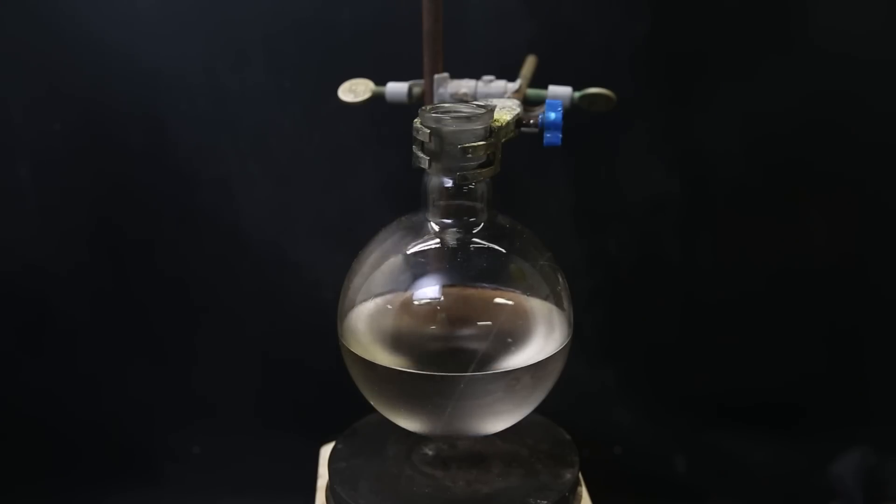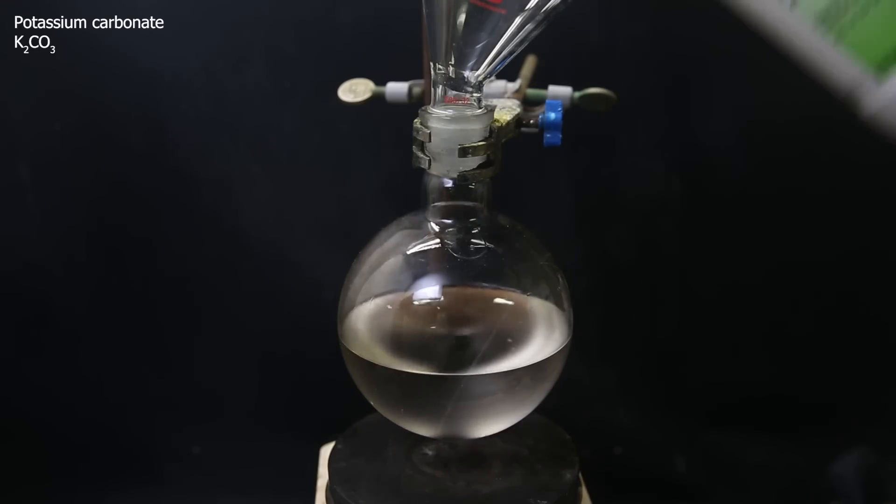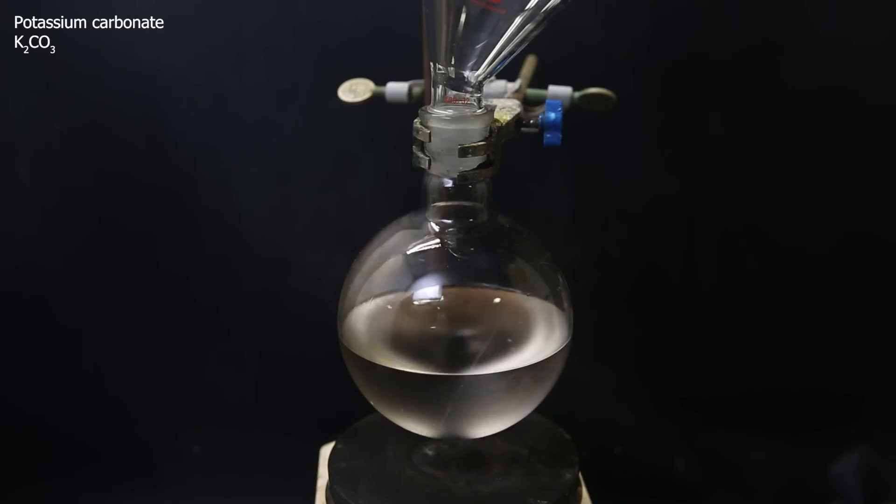Now coming back to the distillate, which is a mixture of water, 1,3-dioxalane, and some impurities. It is also completely saturated with sulfur dioxide. We can destroy the sulfur dioxide by adding potassium carbonate, and at the same time, it causes the water and 1,3-dioxalane to separate, because the water will dissolve the salts and kick out the dioxalane.